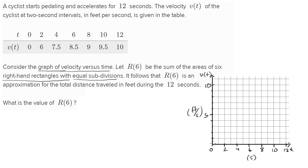Let's plot these points. At time zero, velocity is zero. Time two, velocity is six feet per second. Time four, it's 7.5 — gets us right there. Time six, it's 8.5. Time eight, at eight seconds, it's nine feet per second. At 10 seconds, it's 9.5 feet per second. And at 12 seconds, it's 10 feet per second. I've just plotted the data that they've given us — considering the graph of velocity versus time, at least the data they've given us.